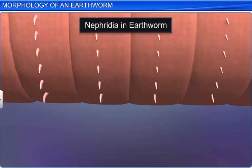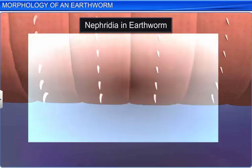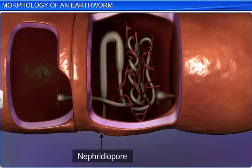Each segment of an earthworm has minute pores called nephridiopores. These pores are connected to nephridia, which serve as excretory organs.